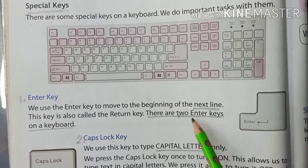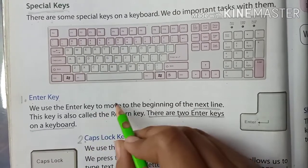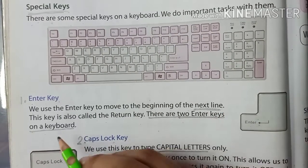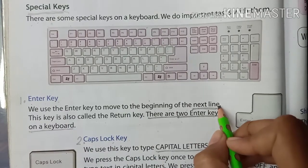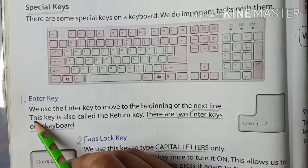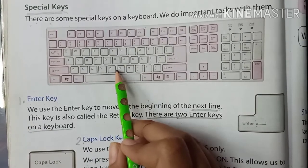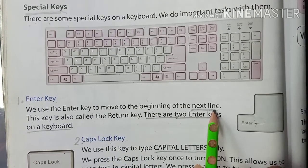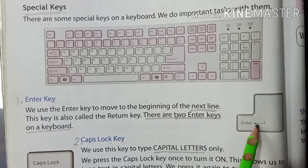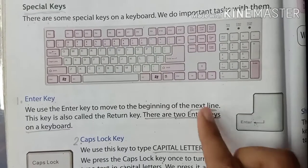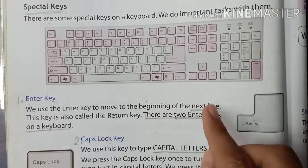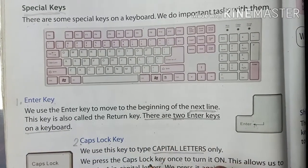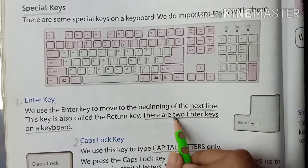There are two enter keys on a keyboard. When you are writing in a copy and you finish a line, you go to the next line. Similarly, when we type on a keyboard and the first line is finished, we press the enter key to go to the next line. There are two enter keys on a keyboard.